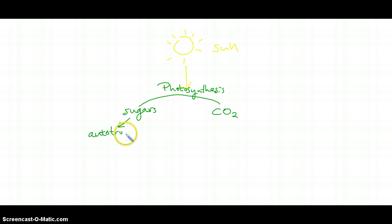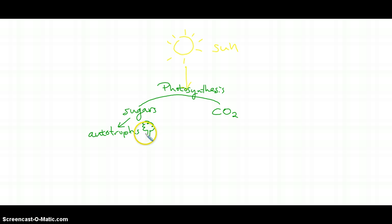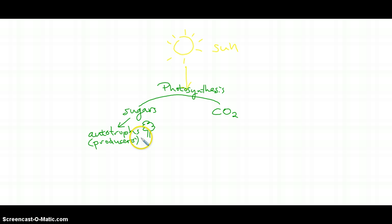These sugars are created by organisms called autotrophs — 'auto' meaning self, 'troph' meaning feeding — so these photosynthetic organisms are able to make their own food. We'll symbolize that with a lovely little tree. Another name for these organisms is producers, since they produce the sugars that run cellular respiration.